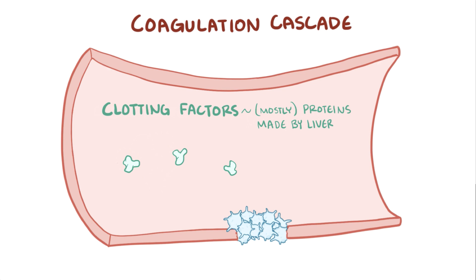The coagulation cascade starts when one of these proteins gets proteolytically cleaved; this active protein then proteolytically cleaves and activates the next clotting factor, and so on.